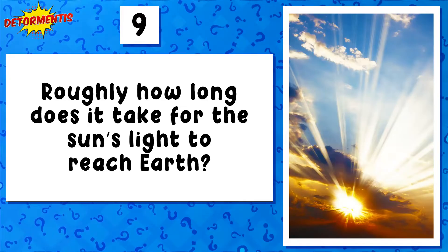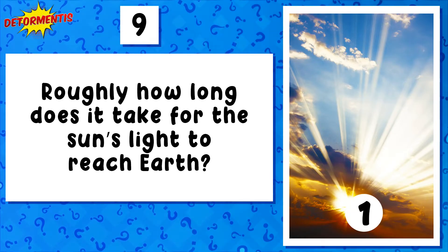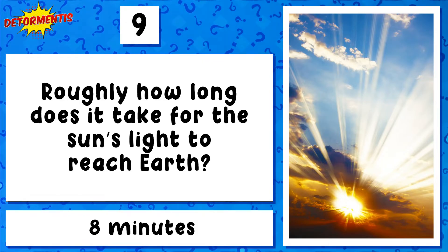Question 9. Roughly how long does it take for the sun's light to reach the Earth? 8 minutes.